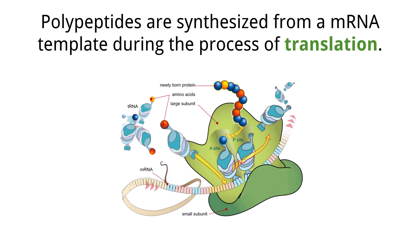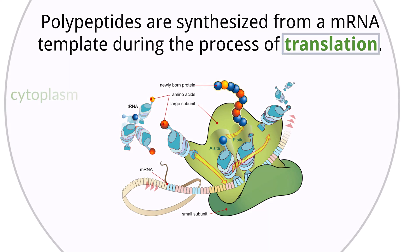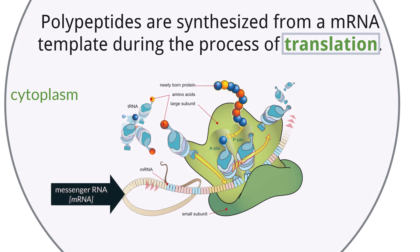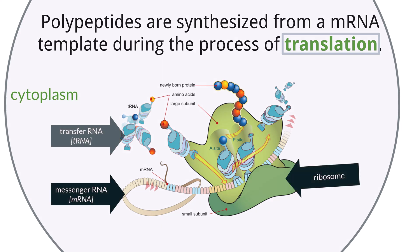Moving on from transcription, we are now going to talk about the process of translation. This process occurs in the cytoplasm of the cell and includes a few components, which are messenger RNA, ribosomes, and tRNA molecules that hold amino acids.